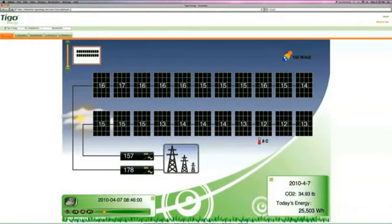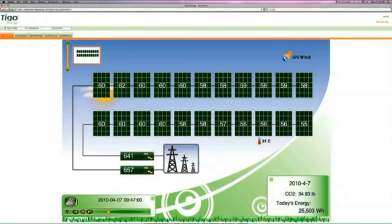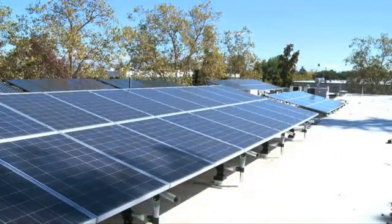The Tygo Energy solution offers unprecedented visibility into solar arrays. When problems occur within the array, it notifies the facility manager or homeowner to take corrective action. This eliminates the need for regular blanket maintenance.